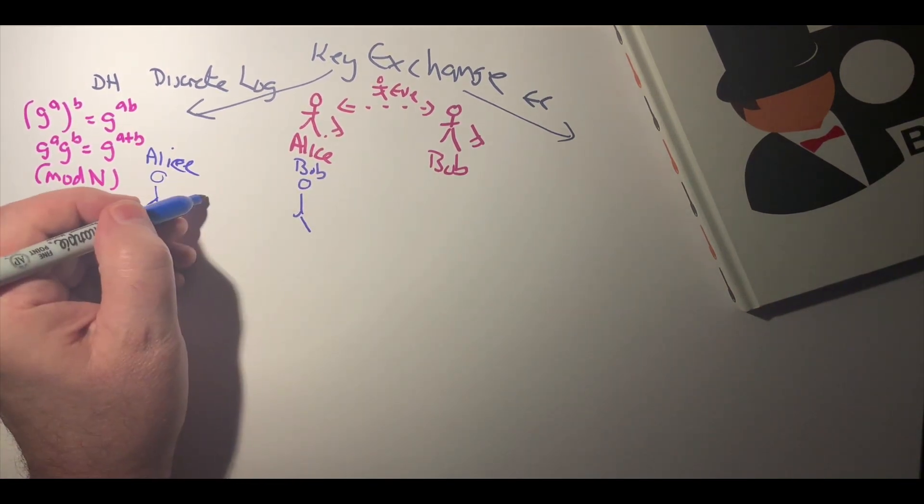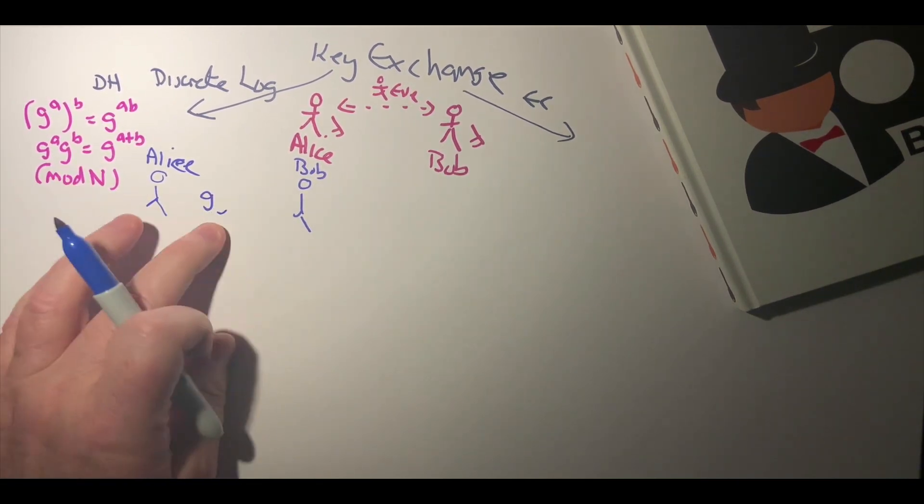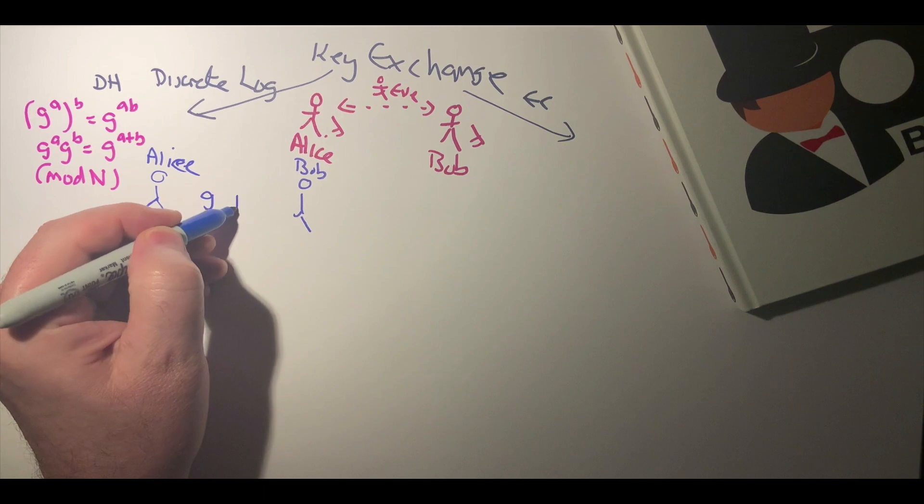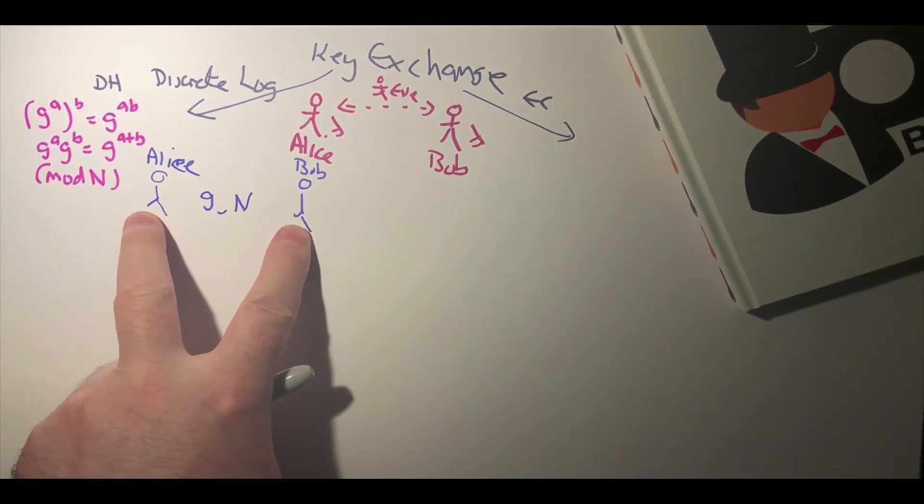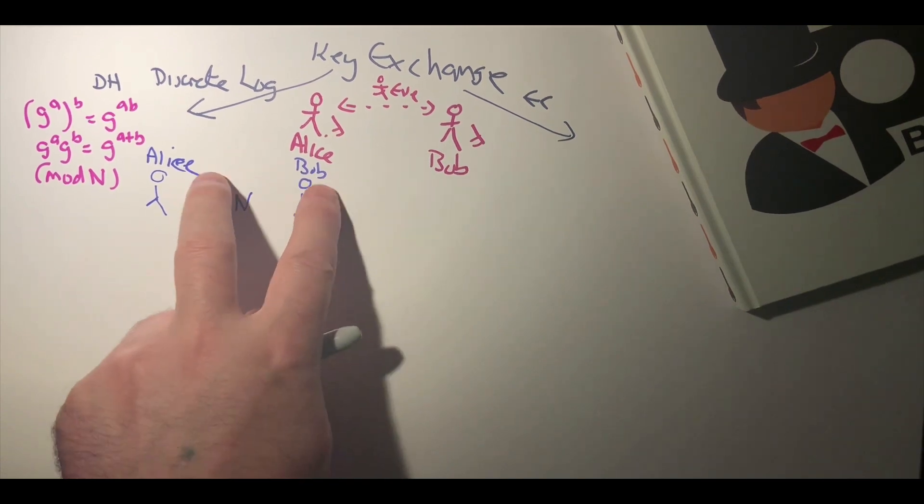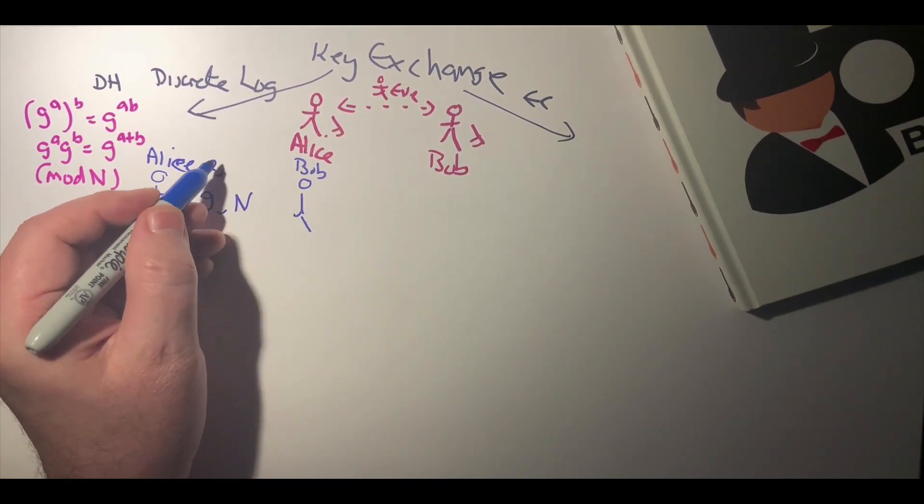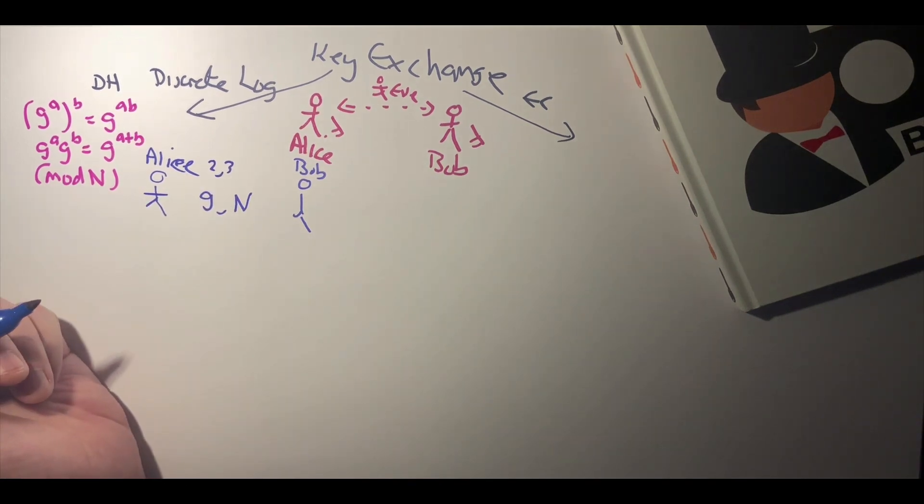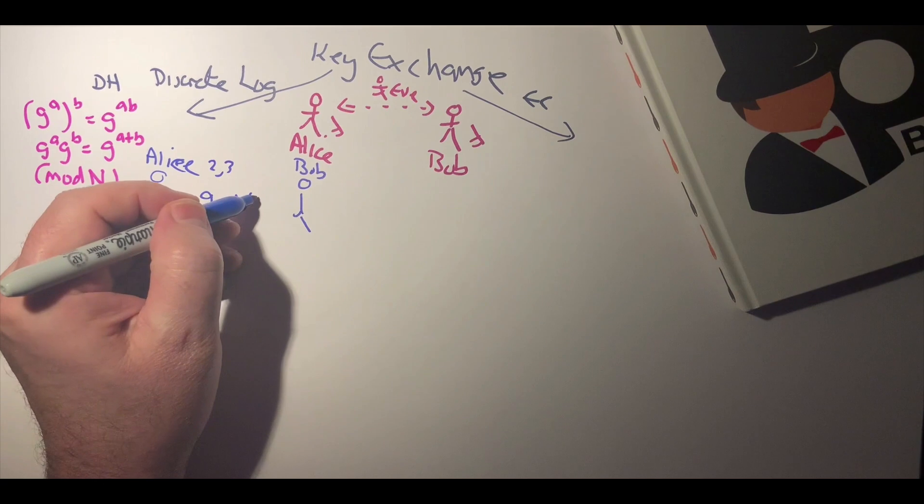Initially they agree on a generator value g and a prime number n. Okay, so that's known to everyone and it's not a secret. The typical value might be 2 or 3, and n has a certain number of bits in it.